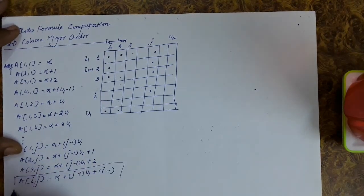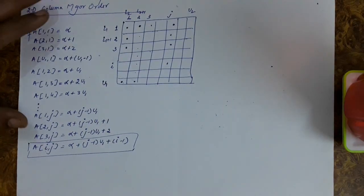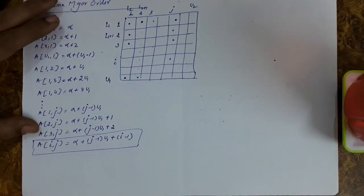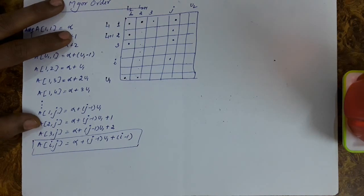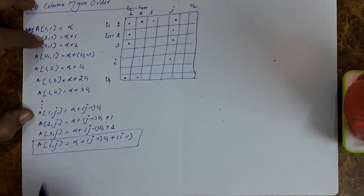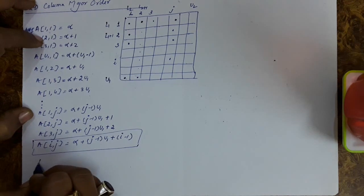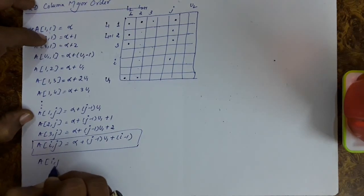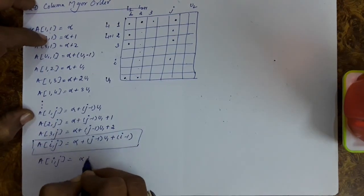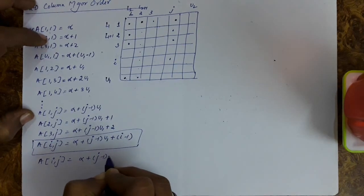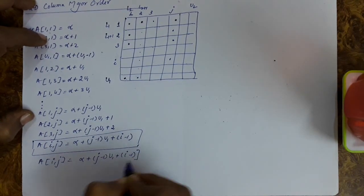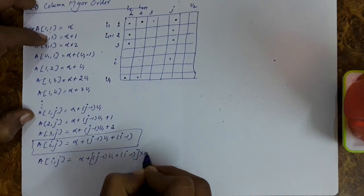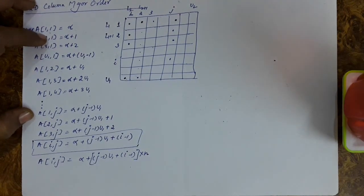This is the preliminary formula with simplifying assumptions for the 2D array in column-major order. Now, removing the assumption that every element takes 1 byte: aij = alpha + [(j-1)*u1 + (i-1)] * n, where n is the size of each element in bytes.